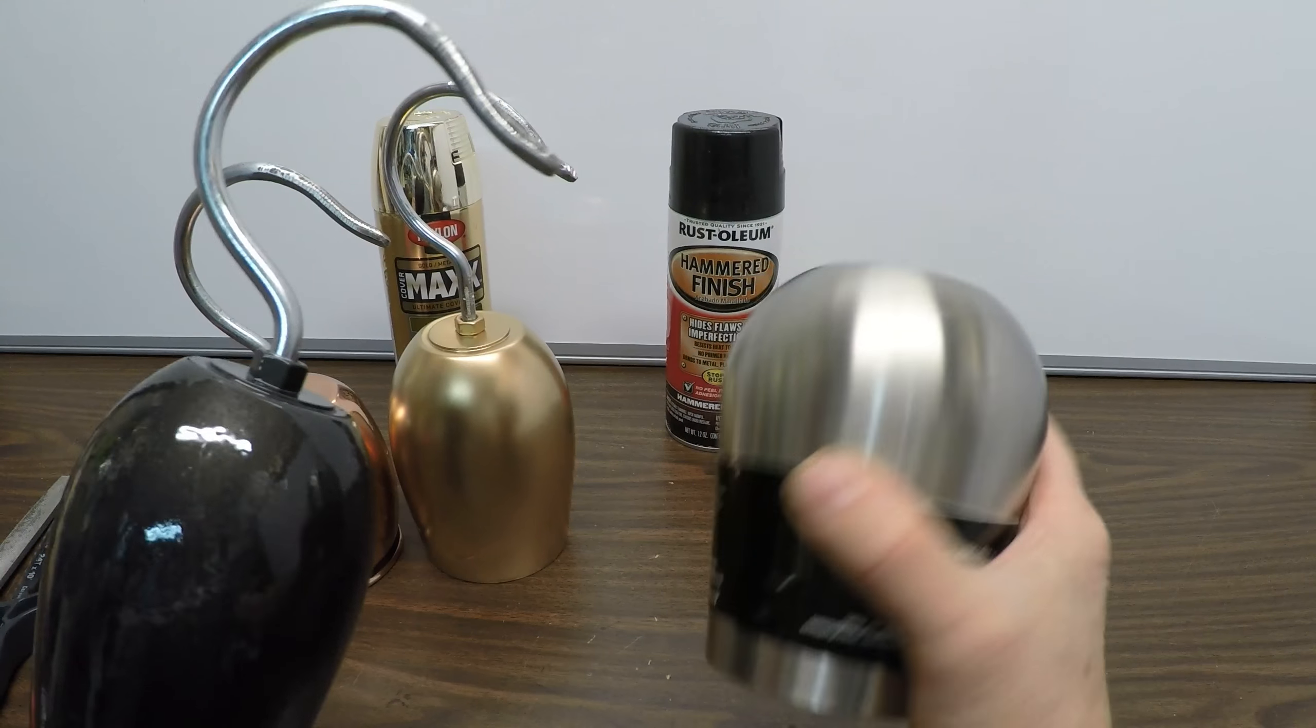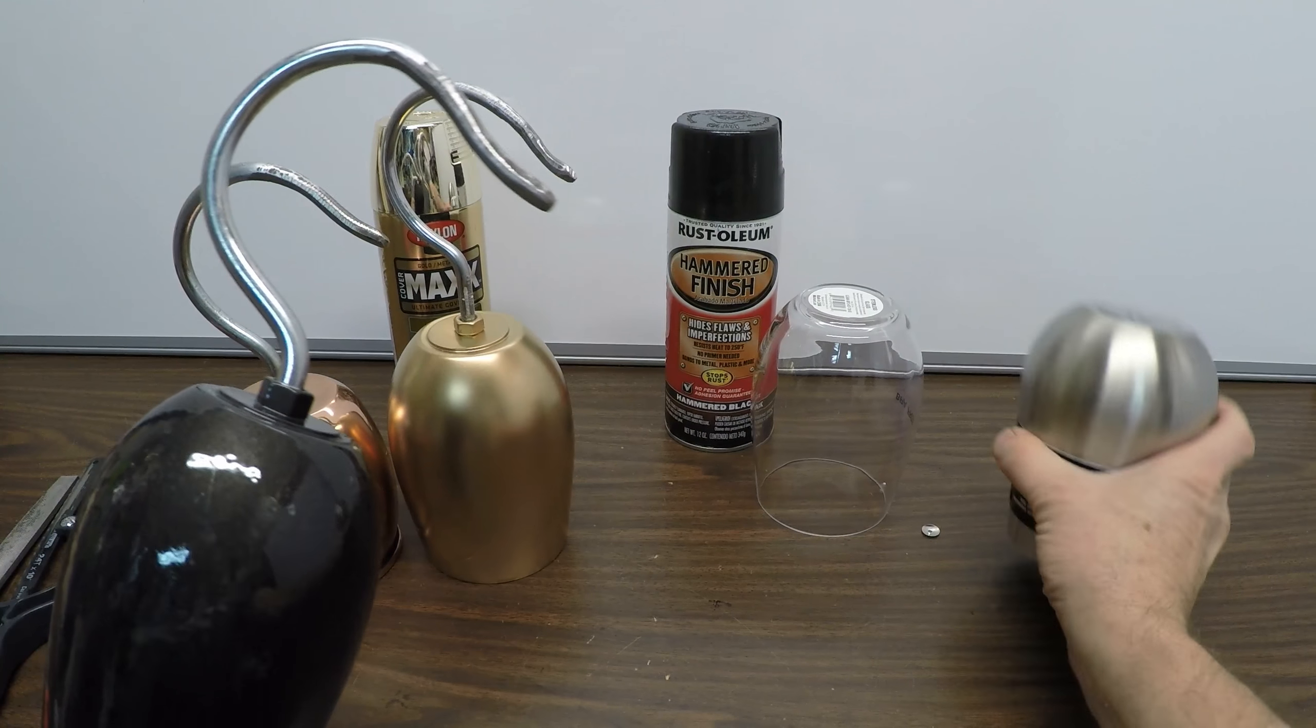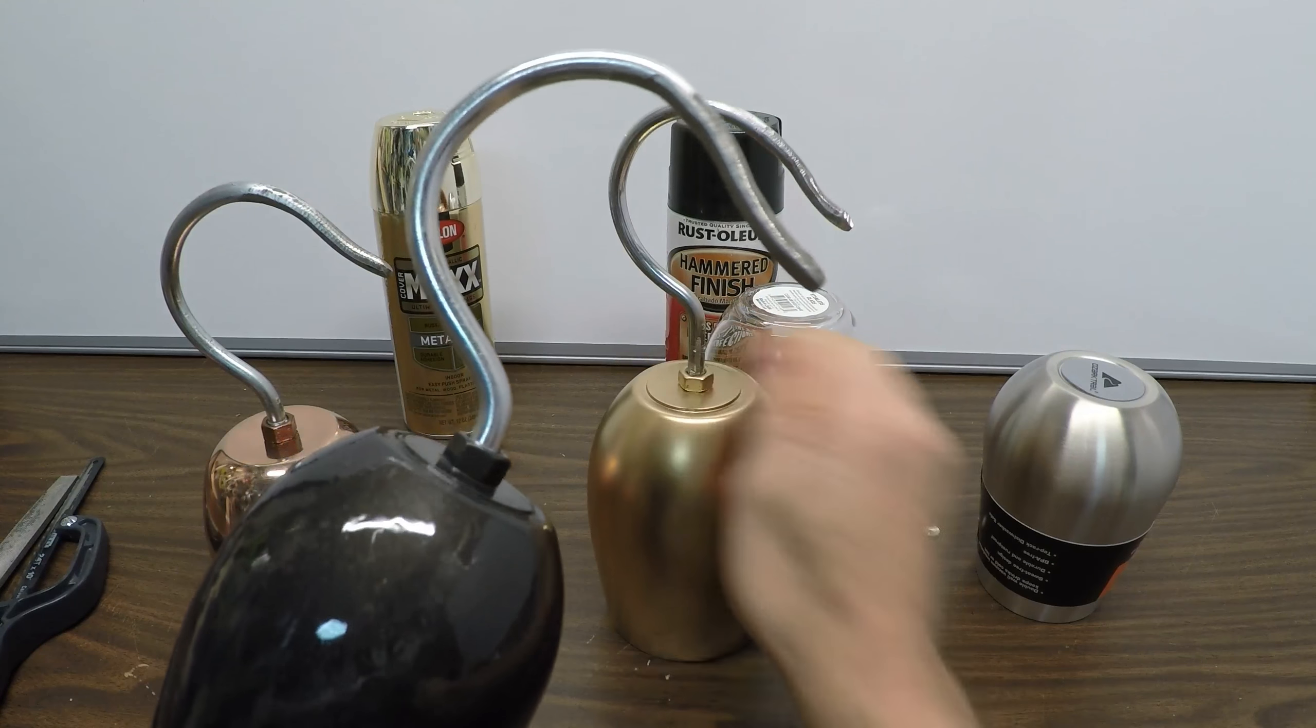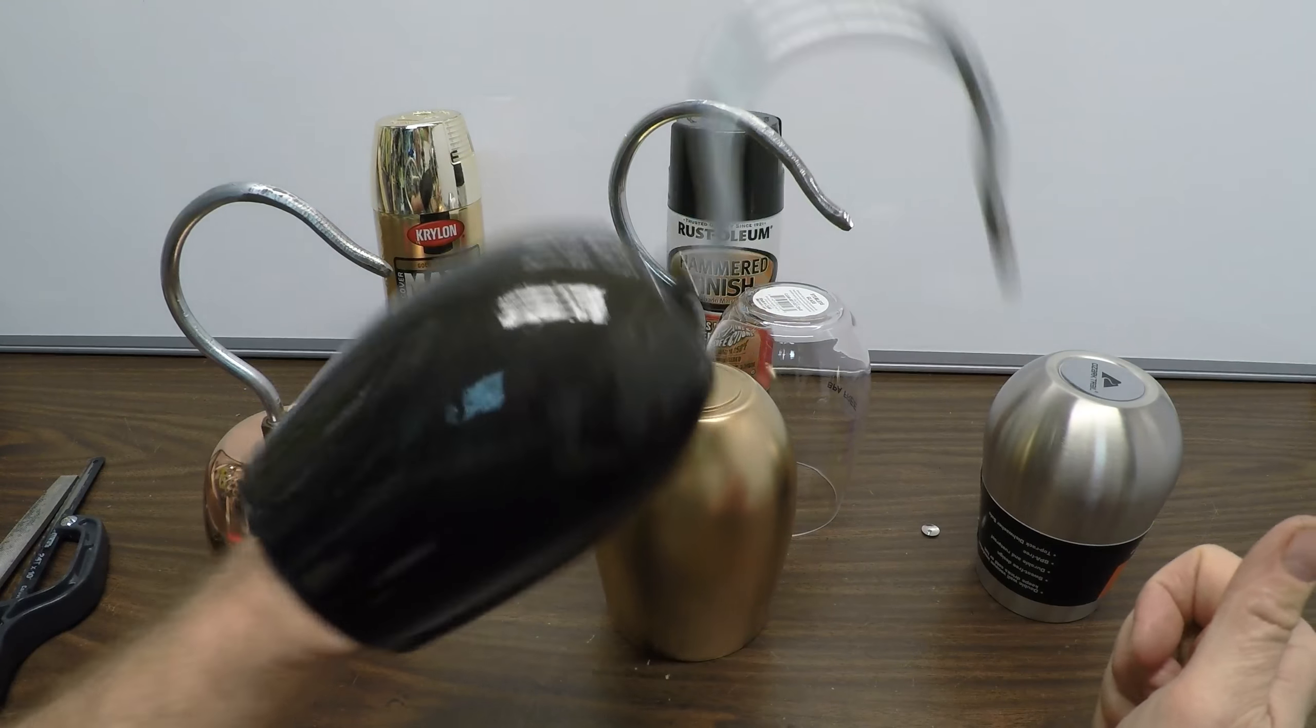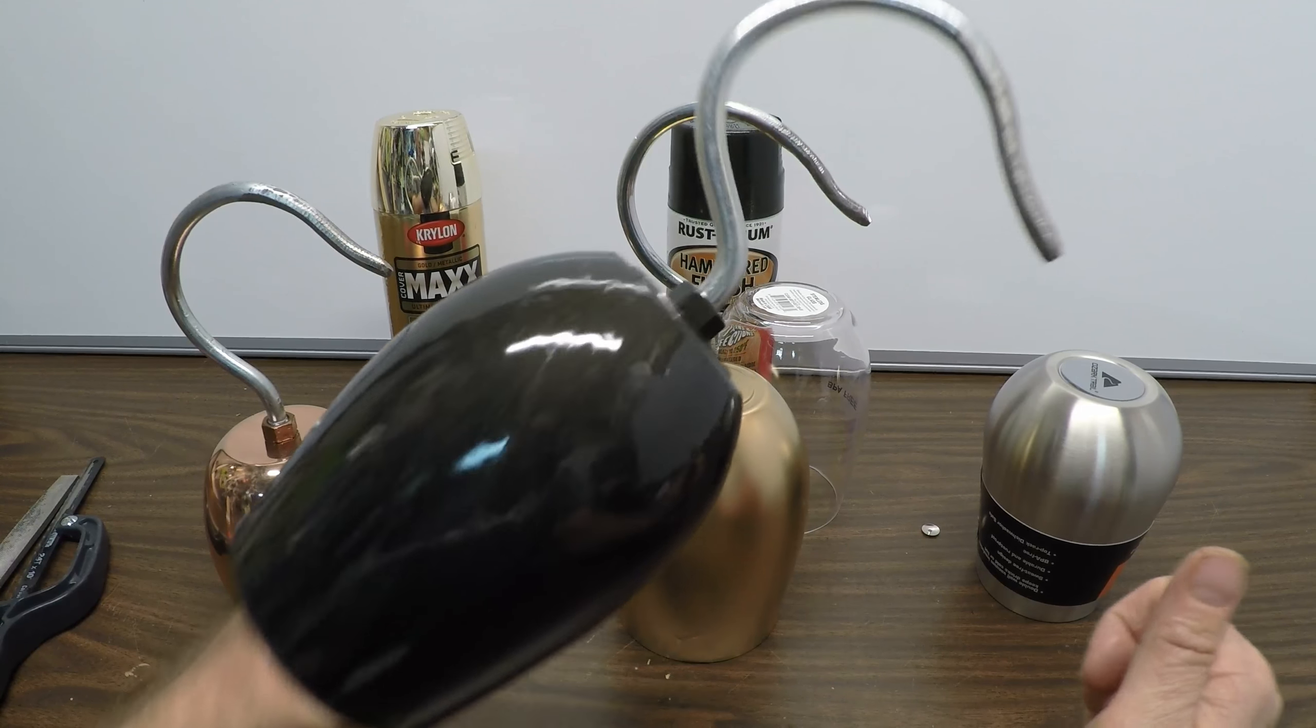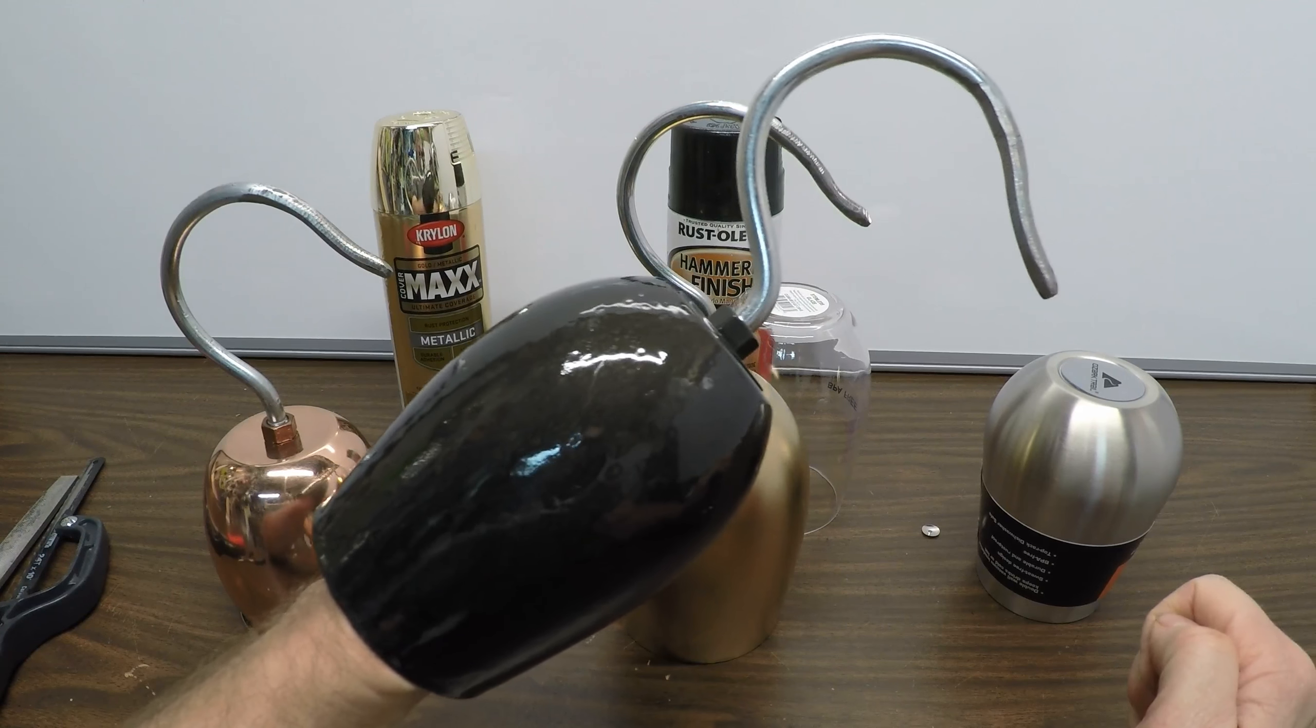Today we'll be making pirate hooks out of stemless wine glasses, plastic, copper, and a little bit of paint, and you got yourself a fancy pirate hook. Interested? Standby!